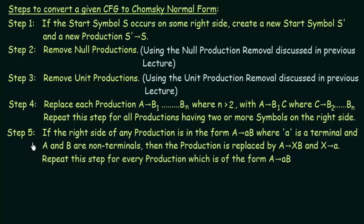Step 5: If the right side of any production is in the form A gives aB, where a is a terminal and B is a non-terminal, then the production is replaced by A gives XB and X gives a. Repeat this step for every production of this form. In Chomsky Normal Form we can have either one terminal symbol or two non-terminal symbols on the right hand side. Productions with one terminal and one non-terminal symbol are not allowed. So whenever you have productions of this form, replace it with A gives XB, where the terminal a is replaced by non-terminal X, and create a new production X gives a.